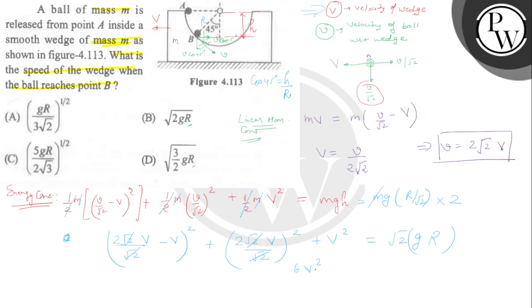Solving 6V² = gr·√2 gives V = √(gr / 3√2). This is the speed of the wedge, and that corresponds to option A, which is our correct answer.